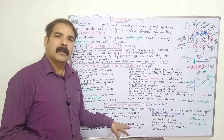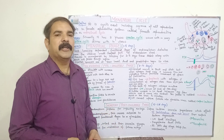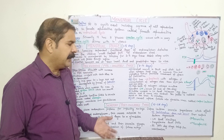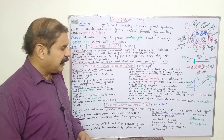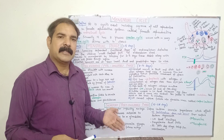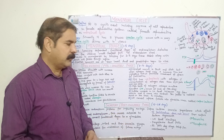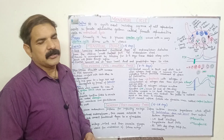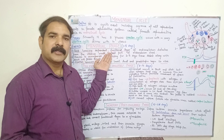If fertilization occurs, implantation of the embryo takes place and the embryo initially feeds on glycogen. If there is no fertilization, the corpus luteum degenerates, LH levels decline, and progesterone levels also fall. At the 28th day, the setup for menstruation occurs and the menstrual phase begins again.